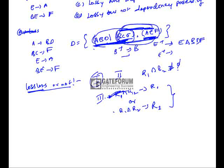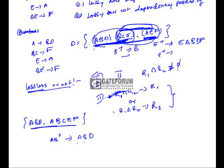Now let us combine these two tables. Combining BCE and AEF gives ABCEF. Now taking the intersection of ABD and ABCEF, we get AB. AB closure: because of A we get B and D. So intersection of R1 and R2 gives R1. All three conditions are satisfied, so we can say the decomposition is lossless. We can eliminate options C and D.